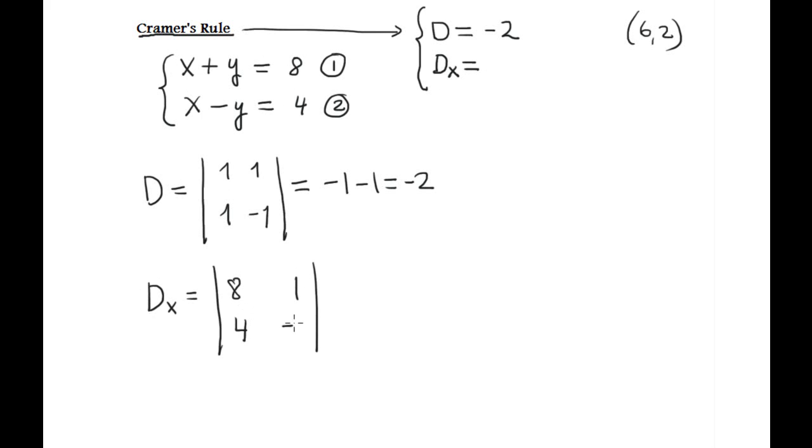Dx by definition is a new determinant when you replace the column of x. This column - not 1 and 1 anymore, you replace it by the right-hand side numbers and the rest is the same. Let's compute that. This is negative 8 and this is negative 4. So Dx is negative 12.